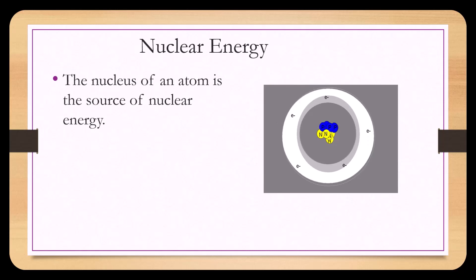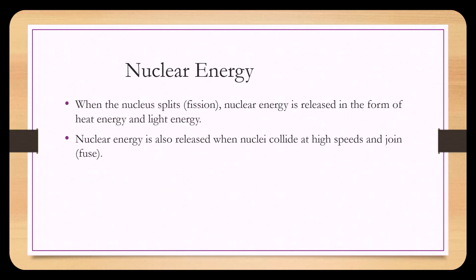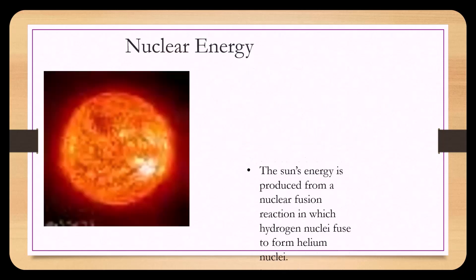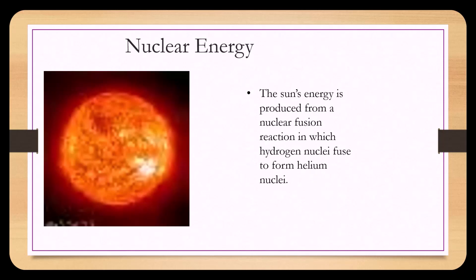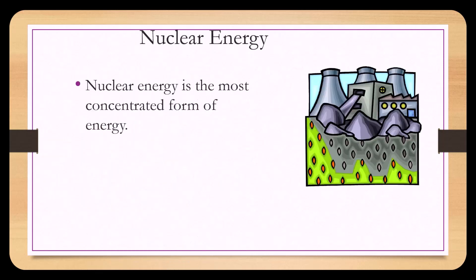The nucleus of an atom is a source of nuclear energy. When a nucleus splits — also called fission — nuclear energy is released in the form of heat energy and light energy. Nuclear energy is also released when nuclei collide at high speeds and join, which is called fusion. The sun's energy is produced from a nuclear fusion reaction in which hydrogen nuclei fuse to form helium nuclei. Nuclear energy is the most concentrated form of energy.